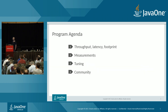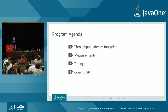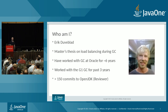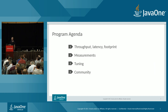Let's look at today's agenda. We'll start by examining three important properties of garbage collection: throughput, latency, and footprint. Then we'll see how to measure the JVM and garbage collector, move into some tuning, and finally talk about the community. I'm Eric, I work at Oracle on the JVM garbage collection team for approximately six years, the last three focused on G1, and I'm also a reviewer and frequent committer to OpenJDK.